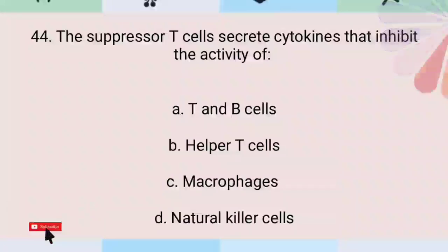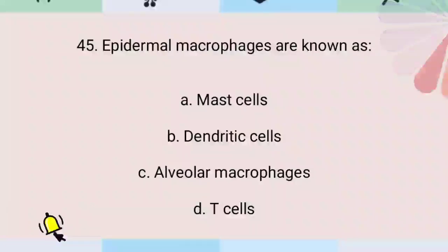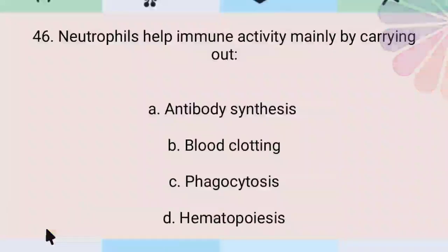The suppressor T cells secrete cytokines that inhibit the activity of T and B cells. Epidermal macrophages are known as dendritic cells.